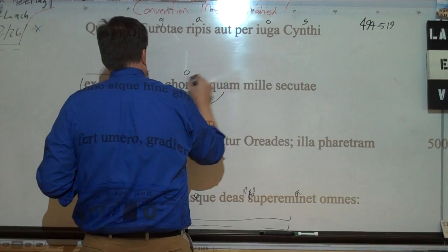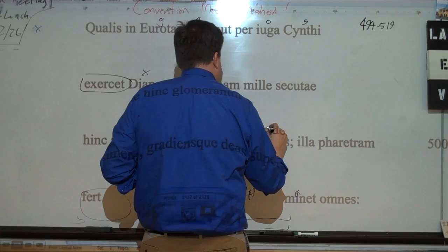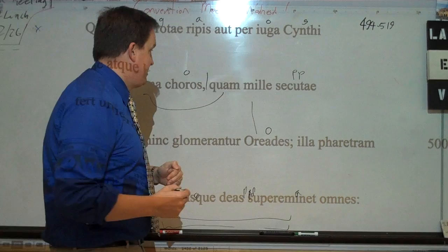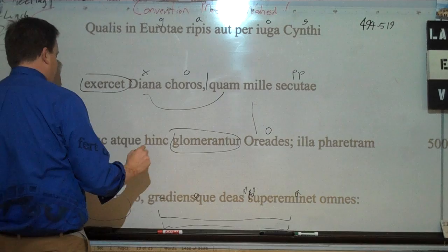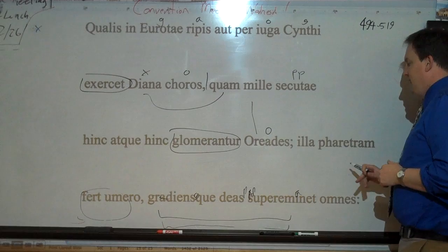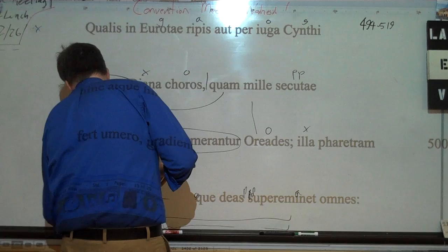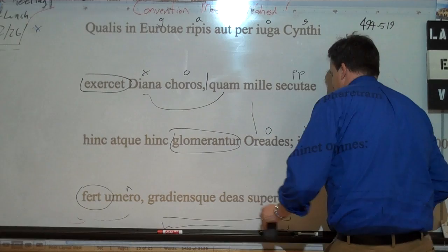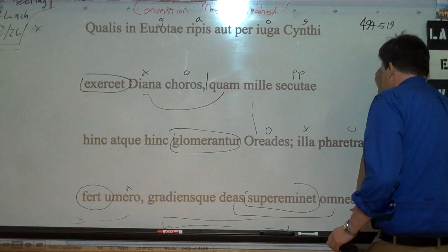Qualis refers back to Diana, relative clause, whom, a thousand Oreads, a thousand Nymphs, having followed. So this is from sequor, it's the perfect participle deponent. So it's perfect active participle, having followed, gathers around, hinc, hinc atque hinc, here and here, or we're going to say, better made, here and there in English. So whom a thousand Oreads, having followed, gather around here and here. Illa, she bears, feret, a quiver, ferretrum, a quiver on her shoulder. And stepping, she super eminet, she towers over all the goddesses. So referring to the Nymphs.